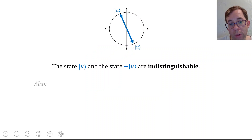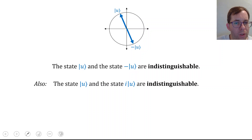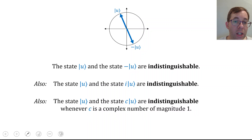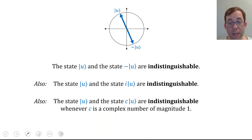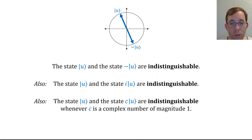It's also true that the state u and the state i times u are indistinguishable by any physical experiment. If we tried to distinguish ket |0⟩ from i times ket |0⟩, rotation doesn't really help, and if you measure, you'll again just see 0 with 100% probability and the state collapse won't change the state. More generally, you can check that ket u and c times ket u are indistinguishable whenever c is a complex number of magnitude 1—whether c equals negative 1, c equals i, or any such value. In all of these cases, there's no physical measurement that can distinguish them.